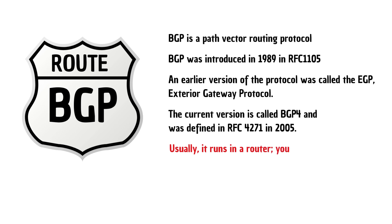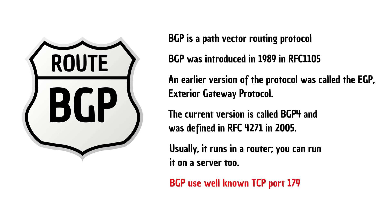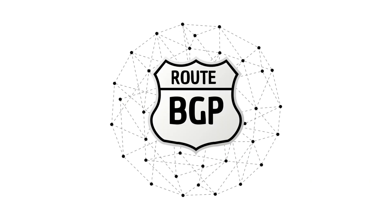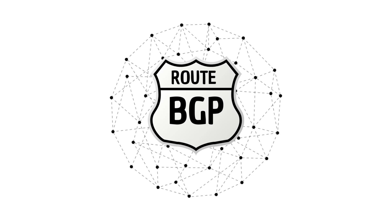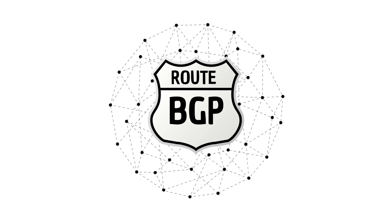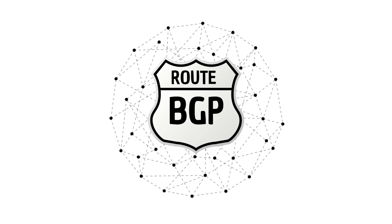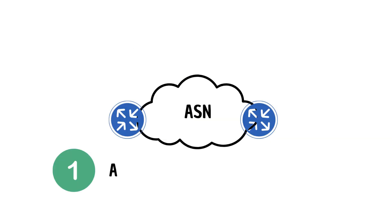Usually BGP runs on a router, but you can also run it on a server. Finally, BGP uses the well-known TCP port 179 for communication. So what do we need to run BGP? The first thing we need is the AS number.